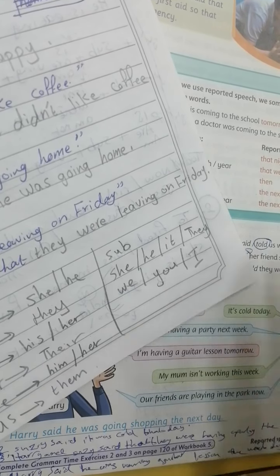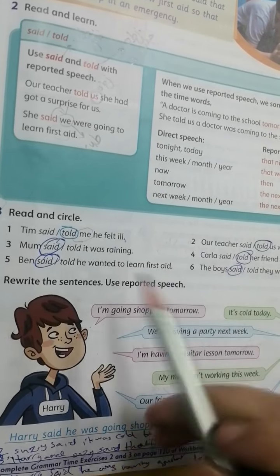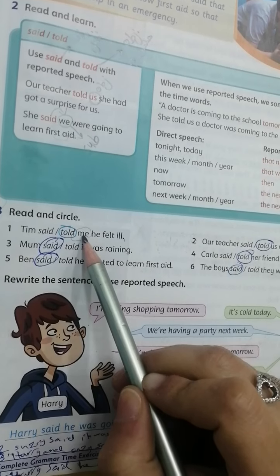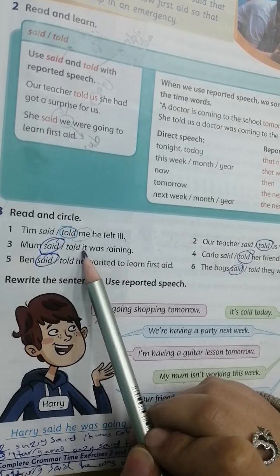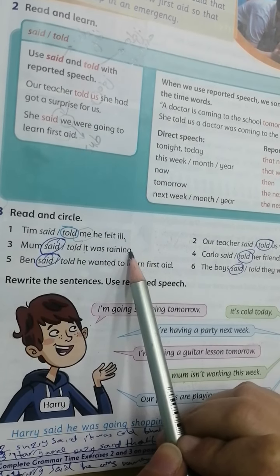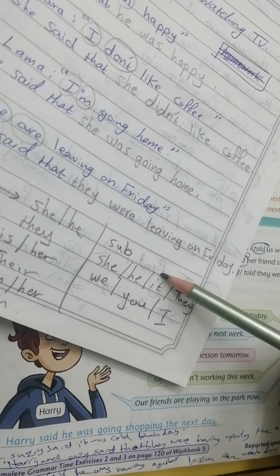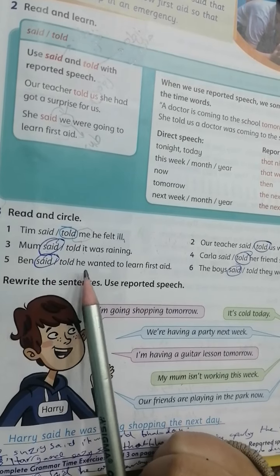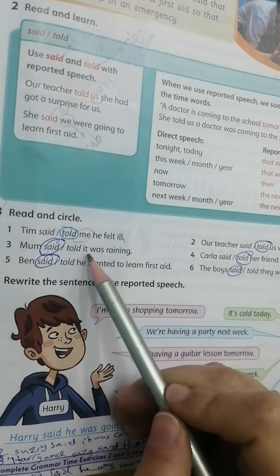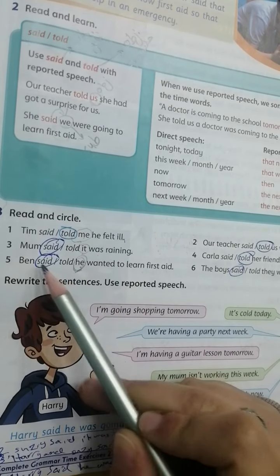هدول عندي إياهم الـ subject. هلأ me هي مفعول به — object — معناته روح أستخدم told. Mom said or told — it was raining: it هي subject → said. Ben said or told he wanted to learn first aid — he هي subject → said.